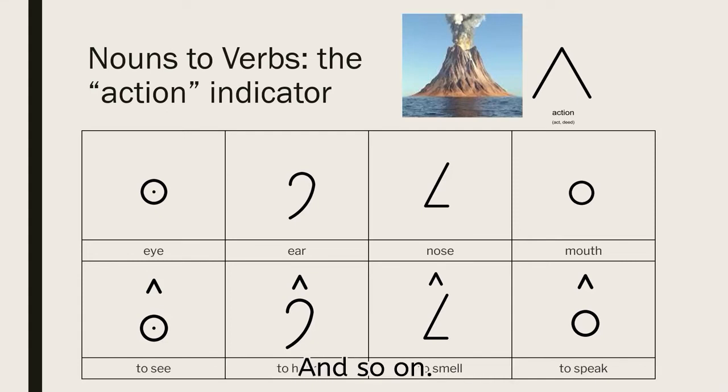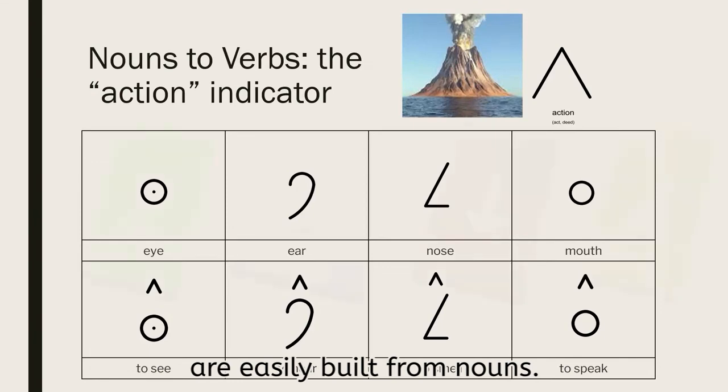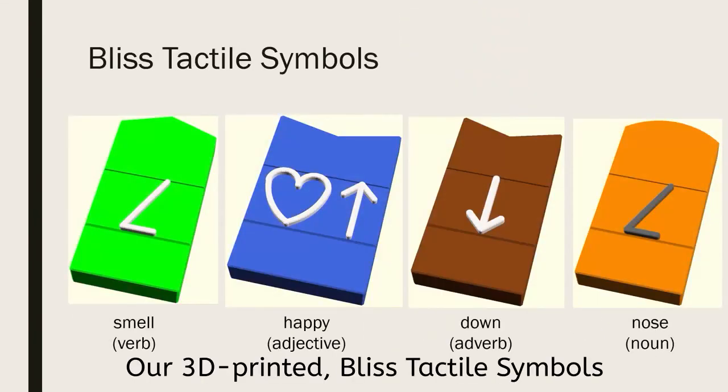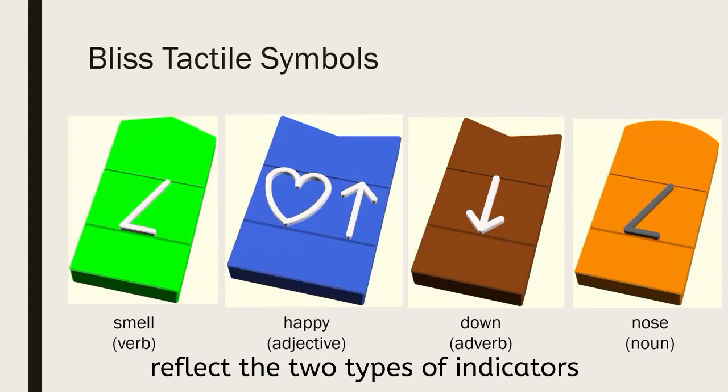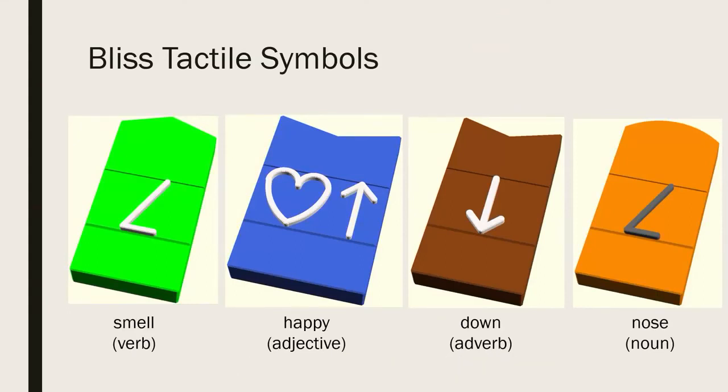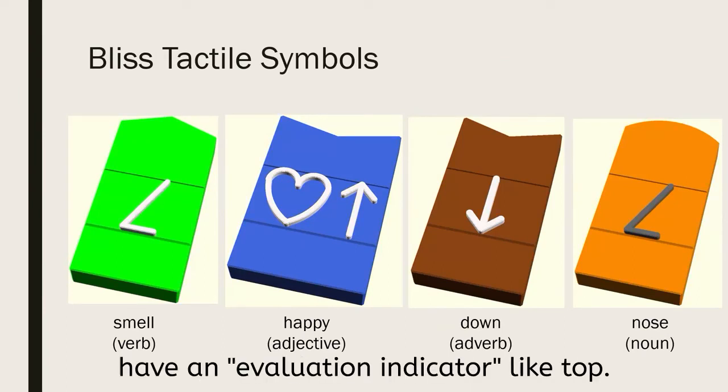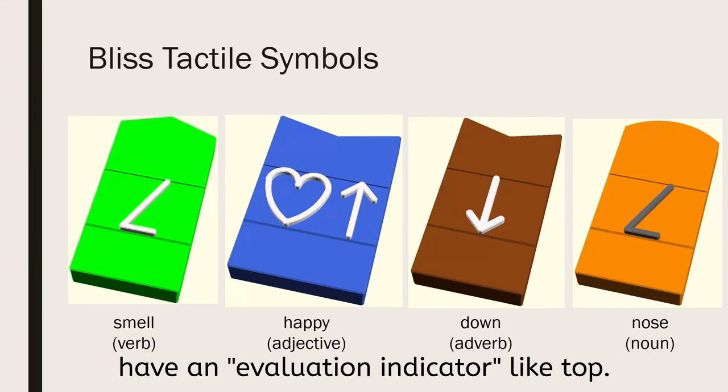Our 3D printed Bliss tactile symbols reflect the two types of indicators in the top edge of the symbol. Verbs have an action indicator-like top. Adjectives and adverbs have an evaluation indicator-like top.